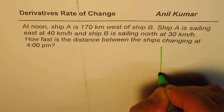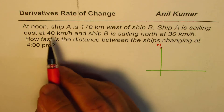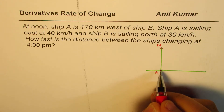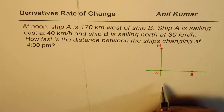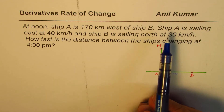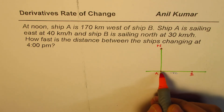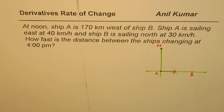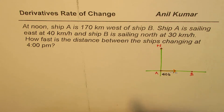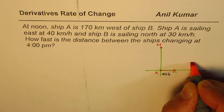First, let us sketch and understand the situation. We have north in this direction. Ship A is 170 kilometers west of ship B, so let me place A here on the west side and B here on the east side. The distance between the two is 170 kilometers. Ship A is sailing east at 40 kilometers per hour, so in time t it moves a distance of 40t. Ship B is sailing north at 30 kilometers per hour, and in the same time it moves to a new point.